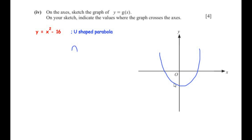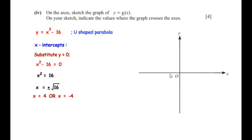To find the x-intercepts, substitute y equals 0, giving x squared minus 16 equals 0, so x squared equals 16. Sending the square to the other side gives x equals plus or minus the square root of 16. The square root of 16 is 4, so x equals positive 4 or x equals negative 4. These are the two x-intercepts.